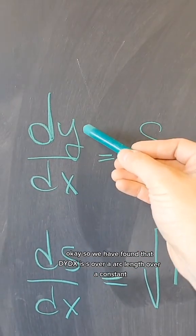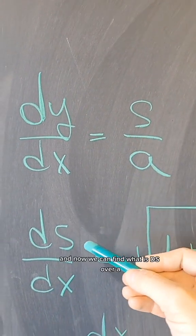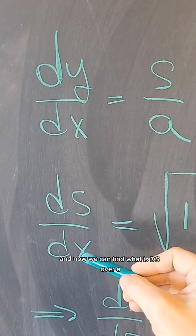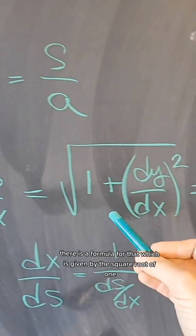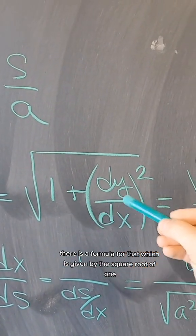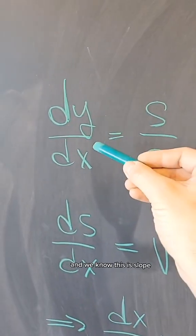So we have found that dy/dx is S over A, arc length over a constant. Now we can find what is dS/dx, the derivative of arc length with respect to X. There is a formula for that which is given by the square root of 1 plus the slope squared, and we know this slope is S over A.